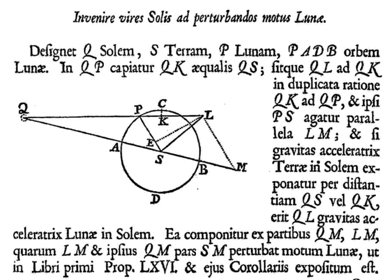In the late 20th and early 21st centuries, modern developments of lunar theory are being used in the Jet Propulsion Laboratory Development ephemeris series of models of the solar system, in conjunction with high-precision observations, to test the exactness of physical relationships associated with the general theory of relativity, including the strong equivalence principle, relativistic gravitation, geodetic precession, and the constancy of the gravitational constant.